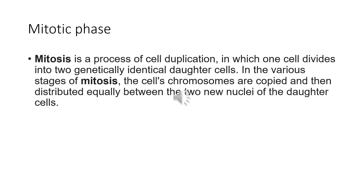Next is the Mitotic phase. Mitosis is the process of cell duplication in which one cell divides into two genetically identical daughter cells. During the various stages of mitosis, the cell's chromosomes are copied and then distributed equally between the two nuclei of the daughter cells.